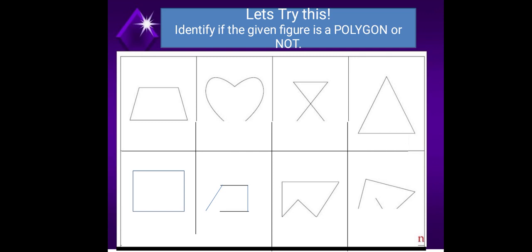Next image is not a polygon because it is not a closed figure. Yes, it is a polygon because it is a closed figure and all the sides here are straight lines. And the last image is obviously not a polygon because it is not a closed figure.